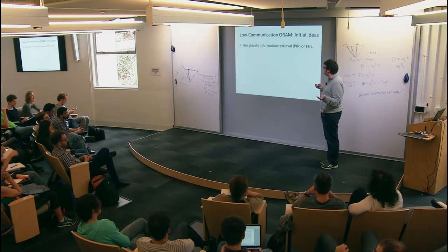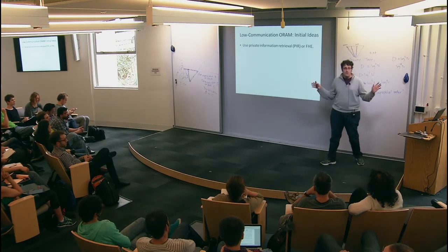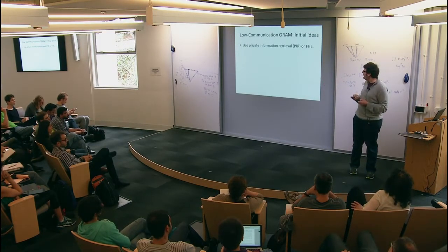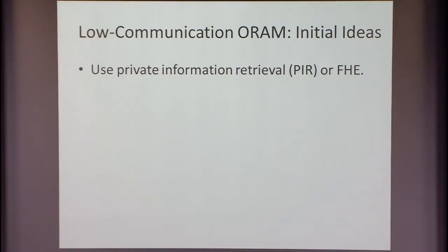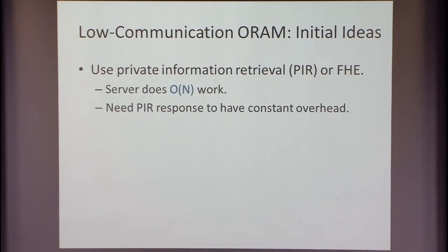One initial idea: why not just use private information retrieval (PIR) or FHE? Forget about ORAM altogether. The client would send an encryption of the location she wants to read, run PIR, and get that back. The bad news is that the server's work is as big as the entire data — order of n, where n is the data size. We still want the server's work to be polylogarithmic. We don't want to go to that setting.